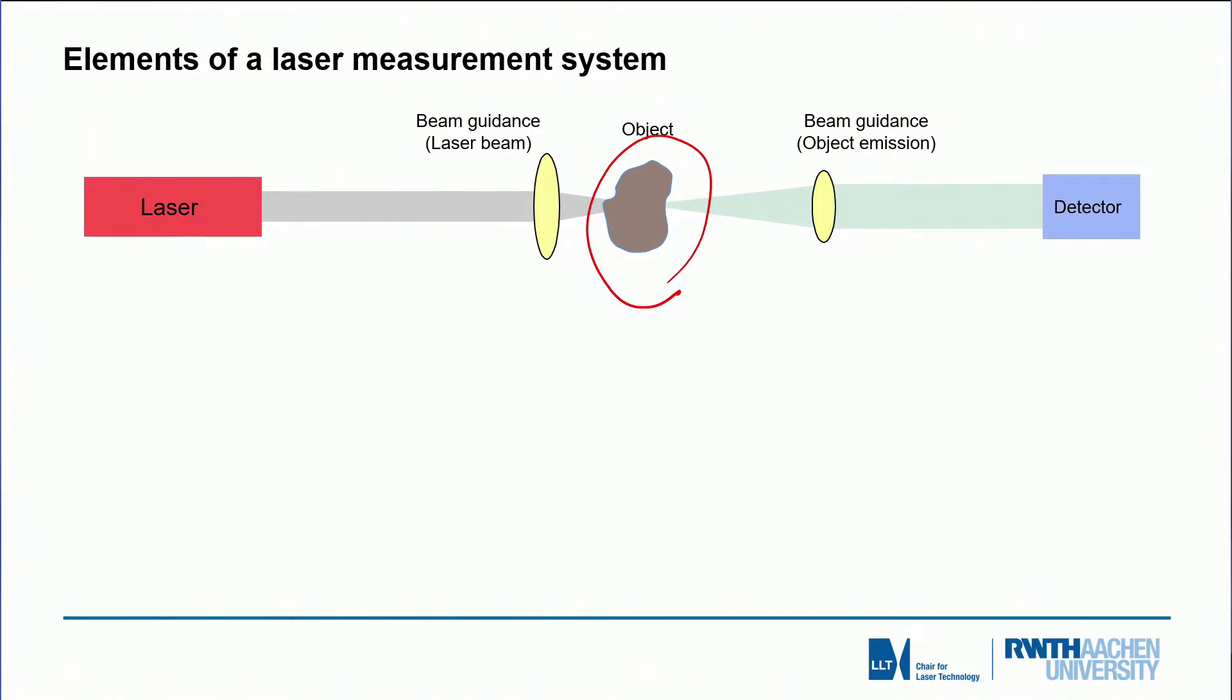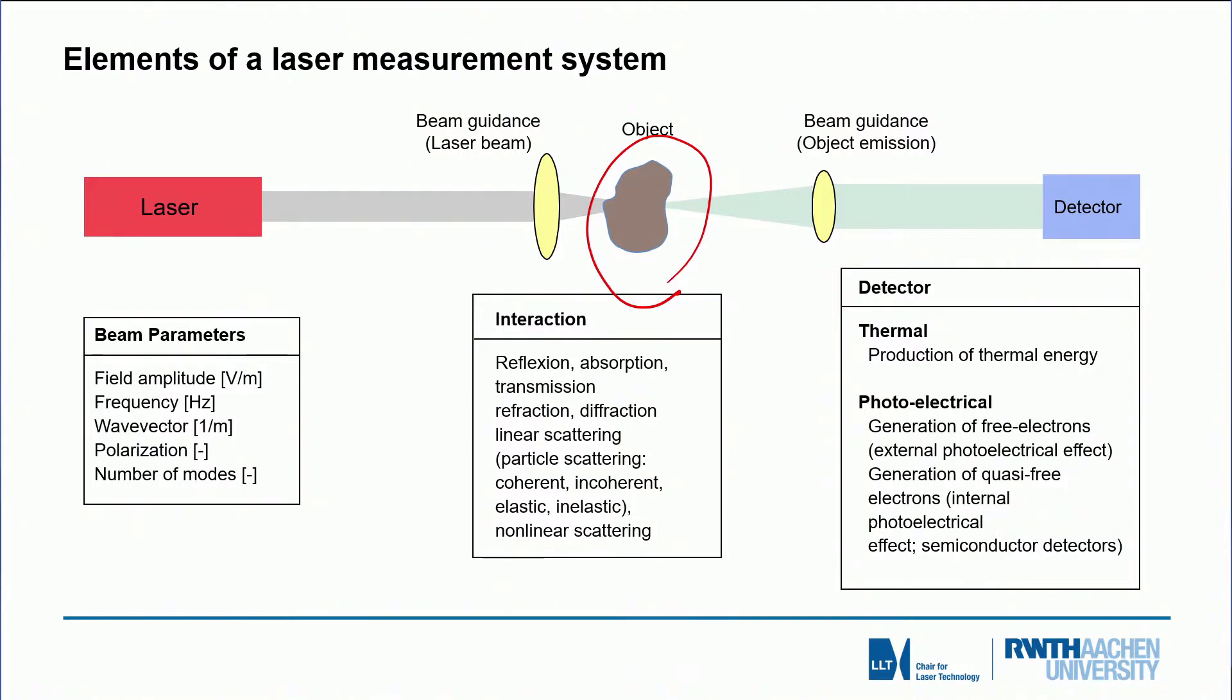If we look at this process in more detail you can see here what we can look at. So we have many beam parameters in terms of amplitude, frequency, of course the wavelength, the polarization. The interaction can be manifold, it can be transmission, absorption, diffraction, you read it. And for the detector we use basically two types of detectors. Thermal detectors where we analyze signals which are proportional to the temperature effect of the signal, or we use directly photoelectrical detectors as for instance the generation of free electrons or in semiconductors the transition of electrons in the bands.